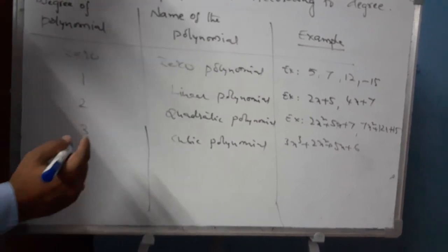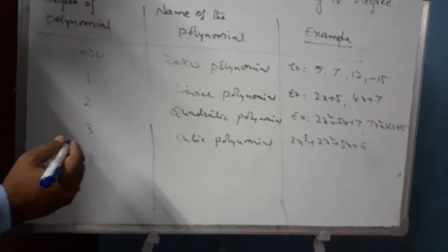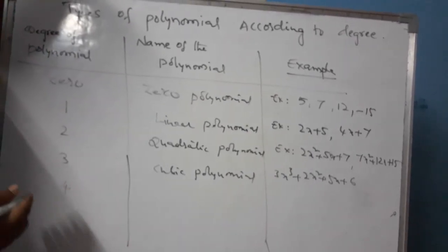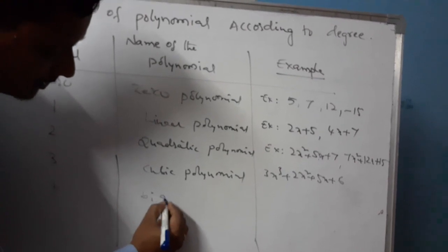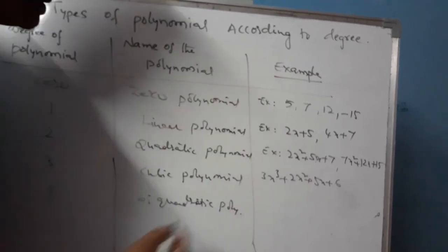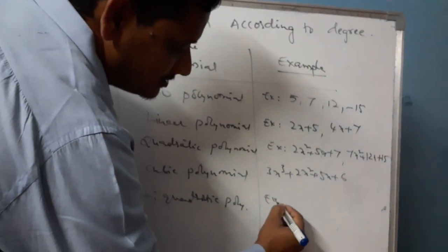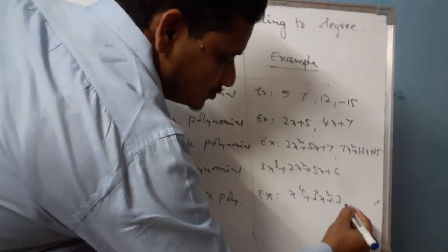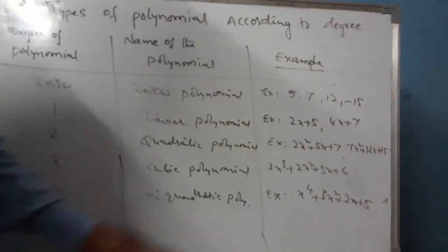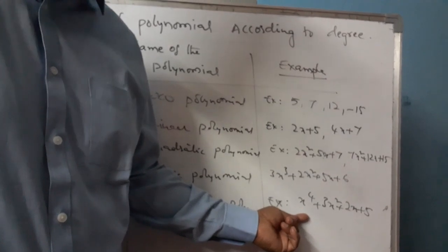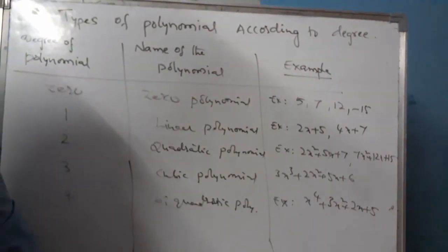If the degree of the polynomial is 4, it is called a biquadratic polynomial. Example: x to the power of 4 plus 3x squared plus 2x plus 5. The highest power of this polynomial is 4, so the degree of the polynomial is 4, and it is known as the biquadratic polynomial.